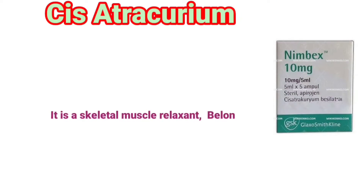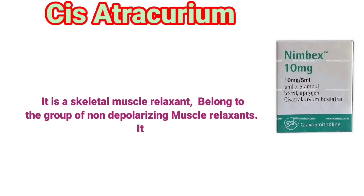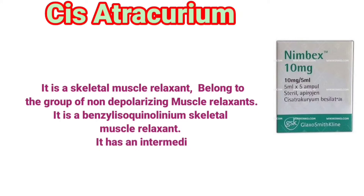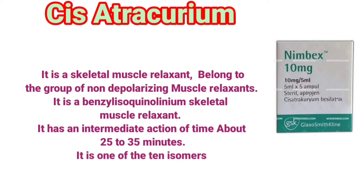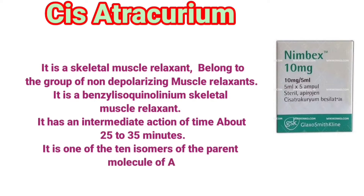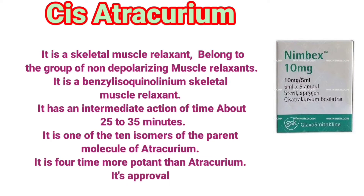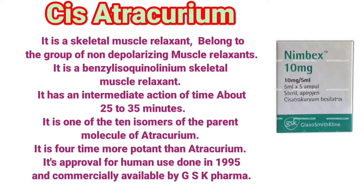Cisatracurium is a skeletal muscle relaxant belonging to the group of non-depolarizing muscle relaxants. It is a benzyl isoquinolinium skeletal muscle relaxant with an intermediate duration of action of about 25 to 35 minutes. It is one of the 10 isomers of the parent molecule atracurium, and is four times more potent than atracurium. Its approval for human use was in 1995 and it is commercially available by GSK Pharma.